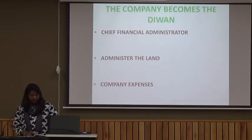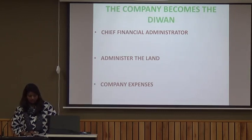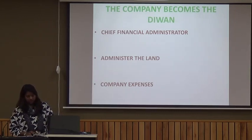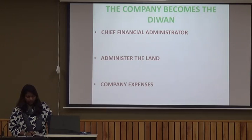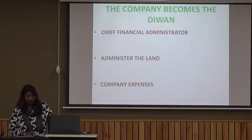In this chapter, after the company becomes Diwan, there were certain duties that had to be fulfilled by the company. First, as the Diwan, they became the chief financial administrator of the territory under its control. They had to think of administering the land and organizing its revenue resources. Third, this had to be done in a way that could yield enough revenue to meet the growing expenses of the company. A trading company also had to ensure that it could buy the products it needed and sell what it wanted.